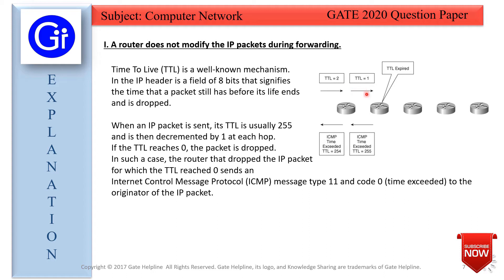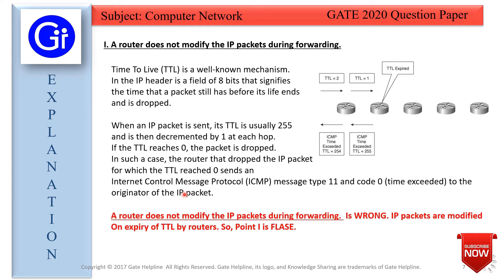From the diagram, you can see that the TTL is decreased at each hop — for example, decremented to 2, then to 1, at which point the TTL has expired and that hop sends an ICMP message. The process continues back to the originator with TTL values 255, 254, and so on, until the originator is informed the TTL has expired and the message did not reach the destination. This means Statement 1 is false — IP packets are modified on the expiry of TTL by routers.